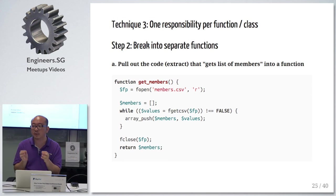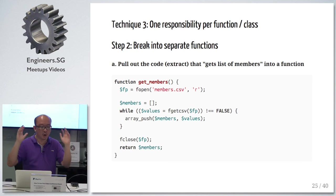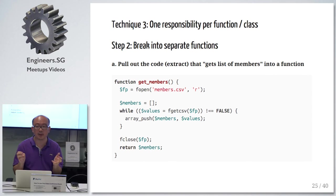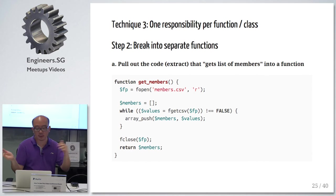When you test a function that only does one thing, it's very easy — your test is only one short block. Whereas if you're testing the earlier function, you've got to check for this, check for that, check what if it's not there, and you end up with a very long test. So breaking it up into smaller functions also helps you write smaller tests, which is more readable. First, we extract get list of members, which is basically opening a file and giving you the array.